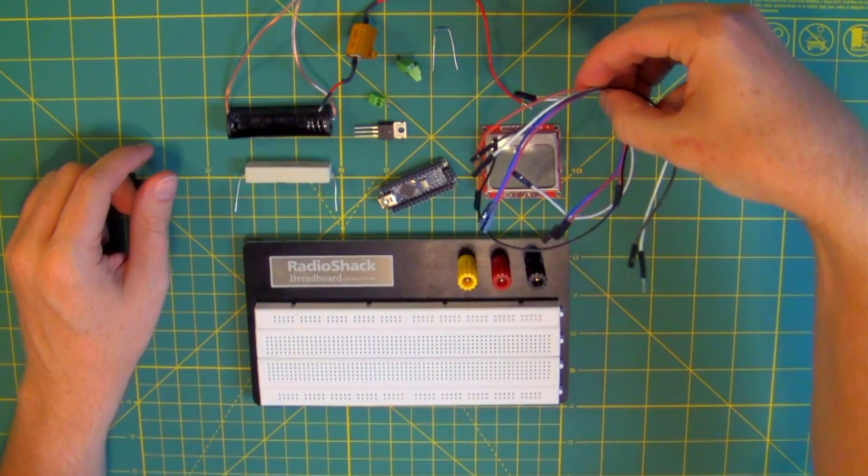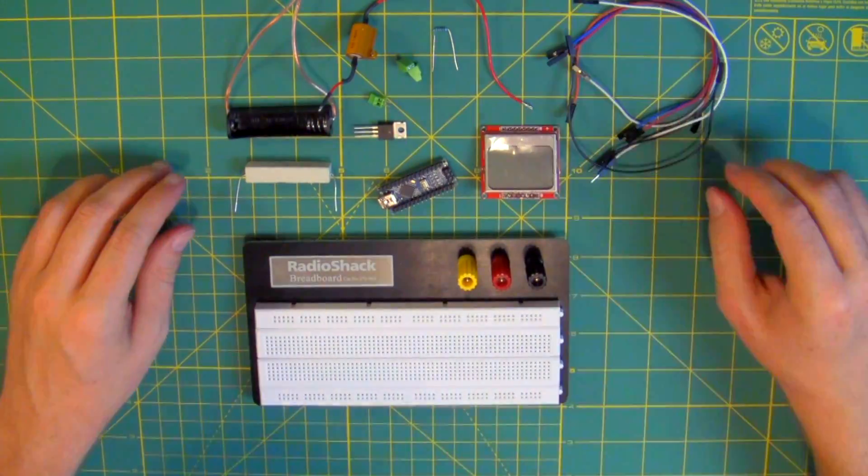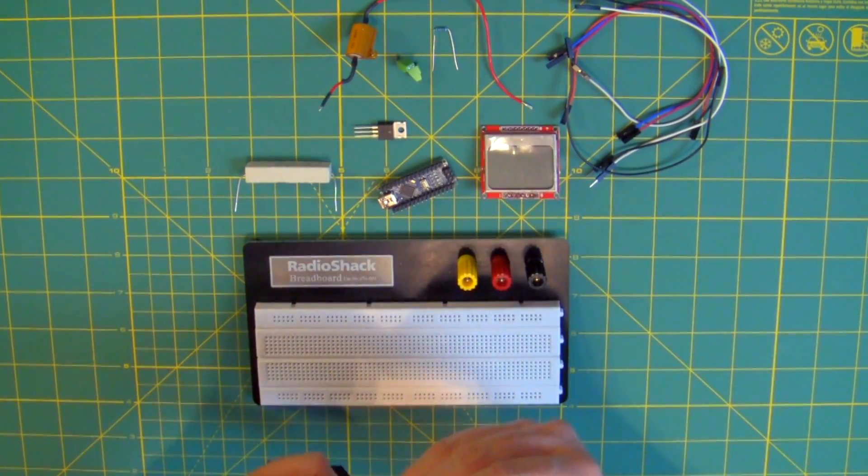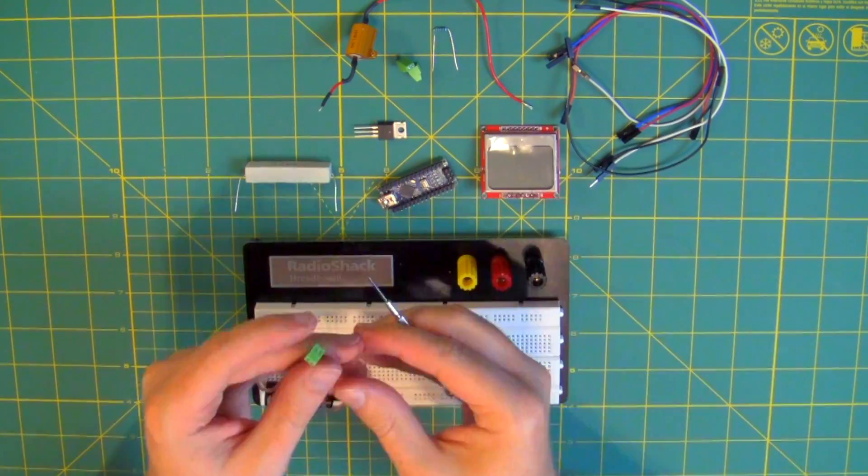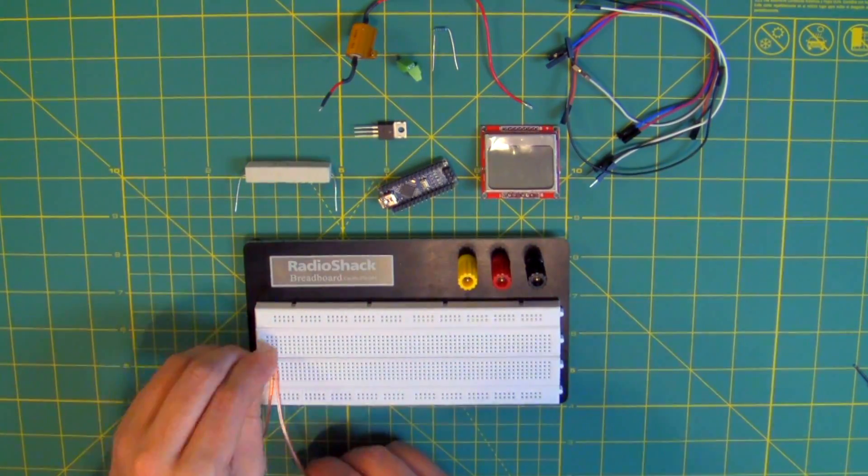And of course, we'll need some assorted jumper wires to connect everything as necessary. So let's get this thing together. First, let's get the lead wires from the battery holder screwed into one of these terminal blocks so we can attach it to the breadboard.